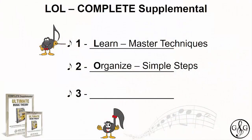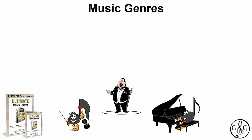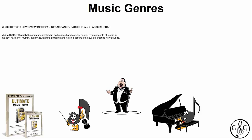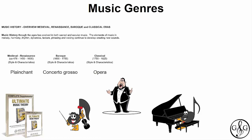Complete Supplemental number three is 'Listen — Music Genres Change What We Hear.' Throughout the complete supplemental series, you are learning about music history. Music history through the ages has evolved in both sacred and secular music. The elements of music — melody, harmony, rhythm, dynamics, texture, phrasing, and voicing — continue to develop, creating new sounds. Various music genres are heard throughout the medieval, renaissance, baroque, and classical eras.